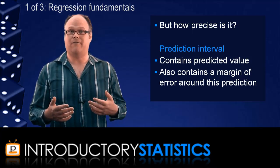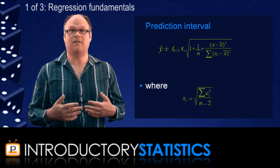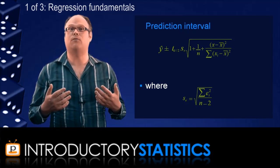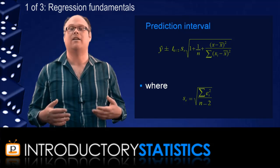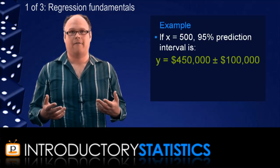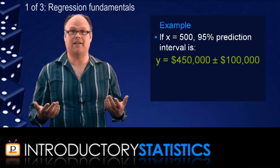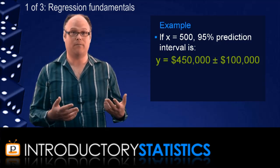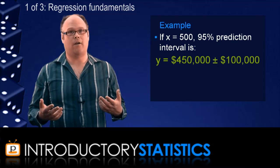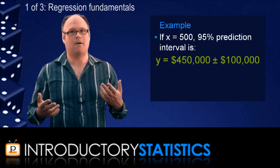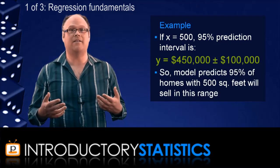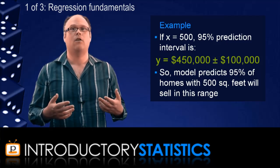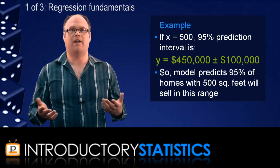So you'll get your predicted value for y, but you'll also get a margin of error around that predicted value. The formula for the prediction interval is fairly complex, but it does involve those residuals I was just mentioning. The formula is given here. Statistical software will often help you calculate the interval, so as per usual, the important thing to be able to do is to interpret the interval. For example, you might find that if a house has 500 square feet, the 95% prediction interval for the selling price of that house is $450,000 plus or minus $100,000. And that means that 95% of homes with 500 square feet will sell for somewhere within that range.